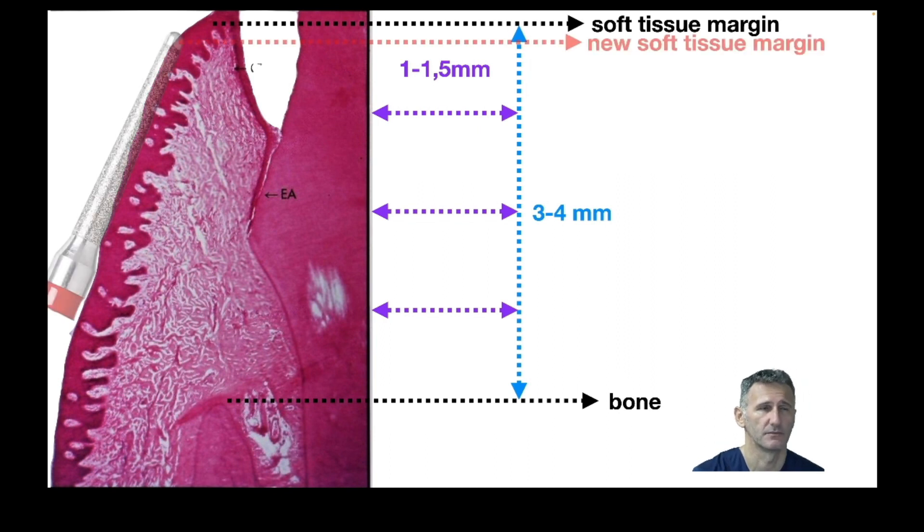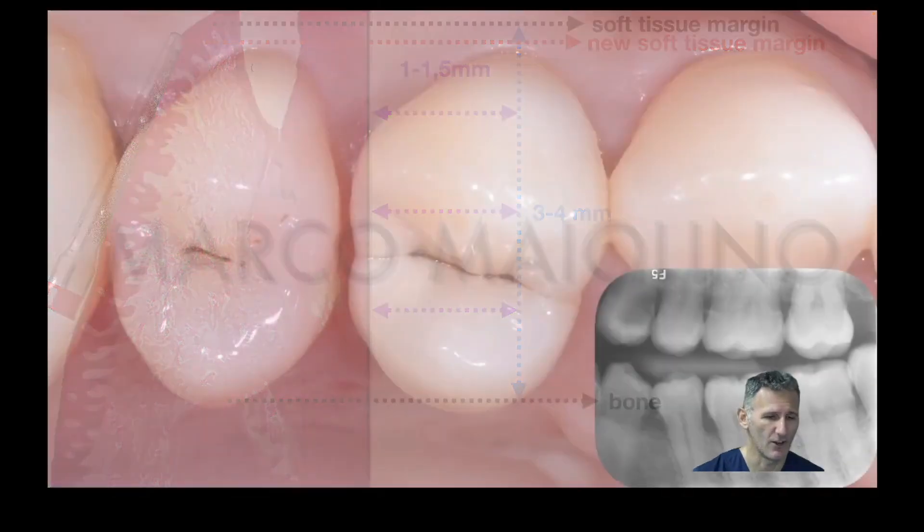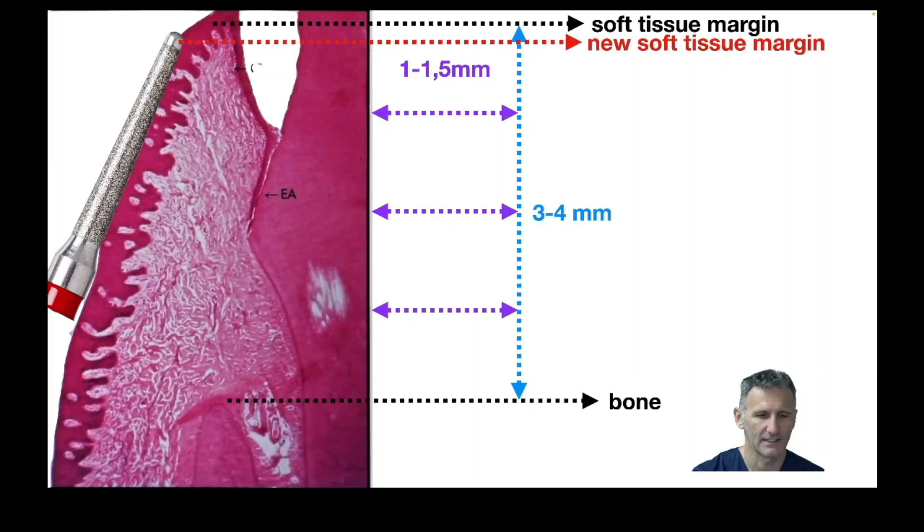When we do the vertical preparation, we always do a small cut of the soft tissues, so the recession that we have is even more. But after the preparation, in the following weeks we will experience most of the time a rebound of the soft tissues.